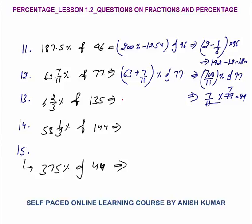6 2/3% — this is very simple. 1/15 is 6 2/3%. So 1/15 of 135: 15 × 9 = 135, so 9 will be your final answer.